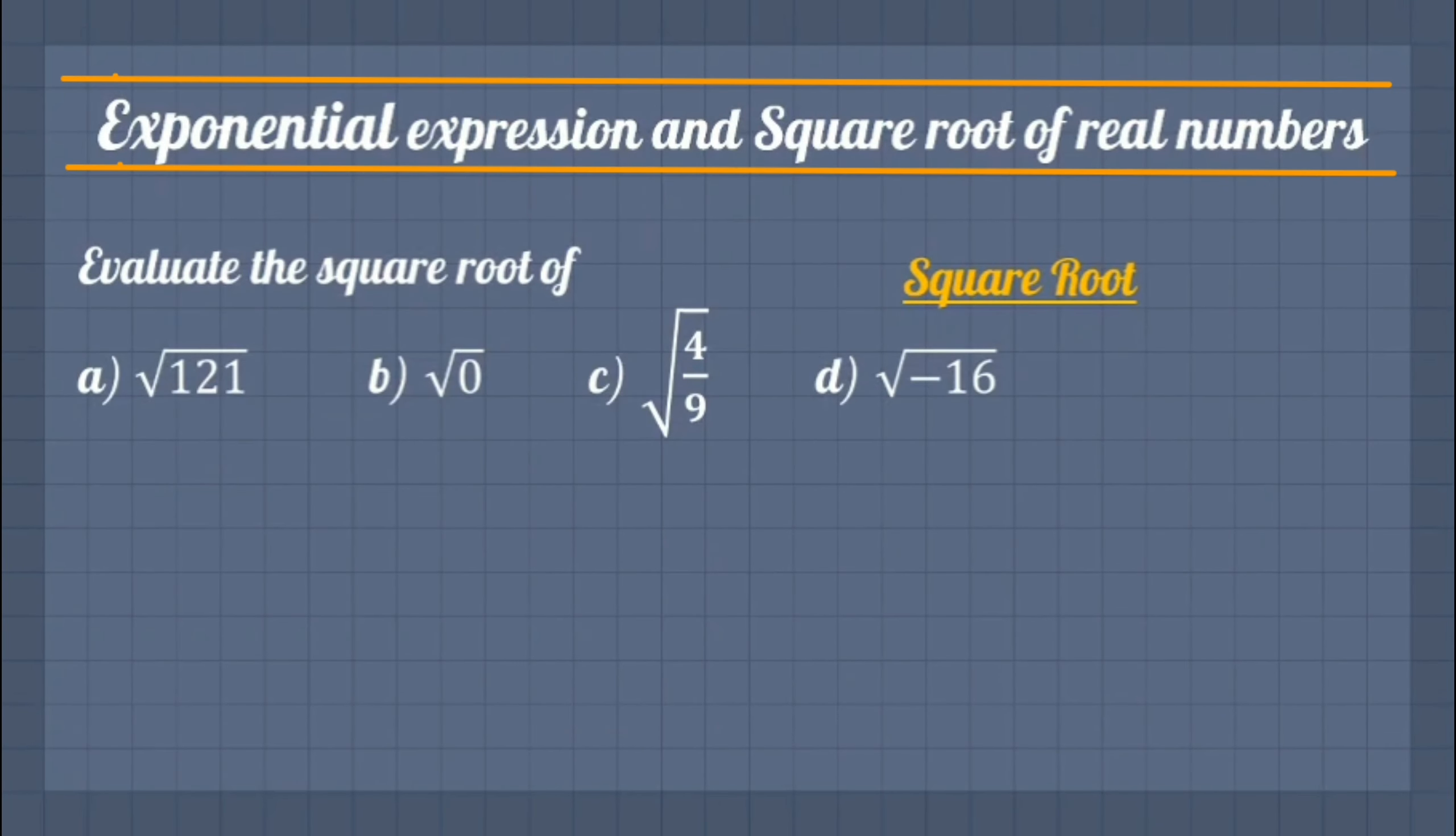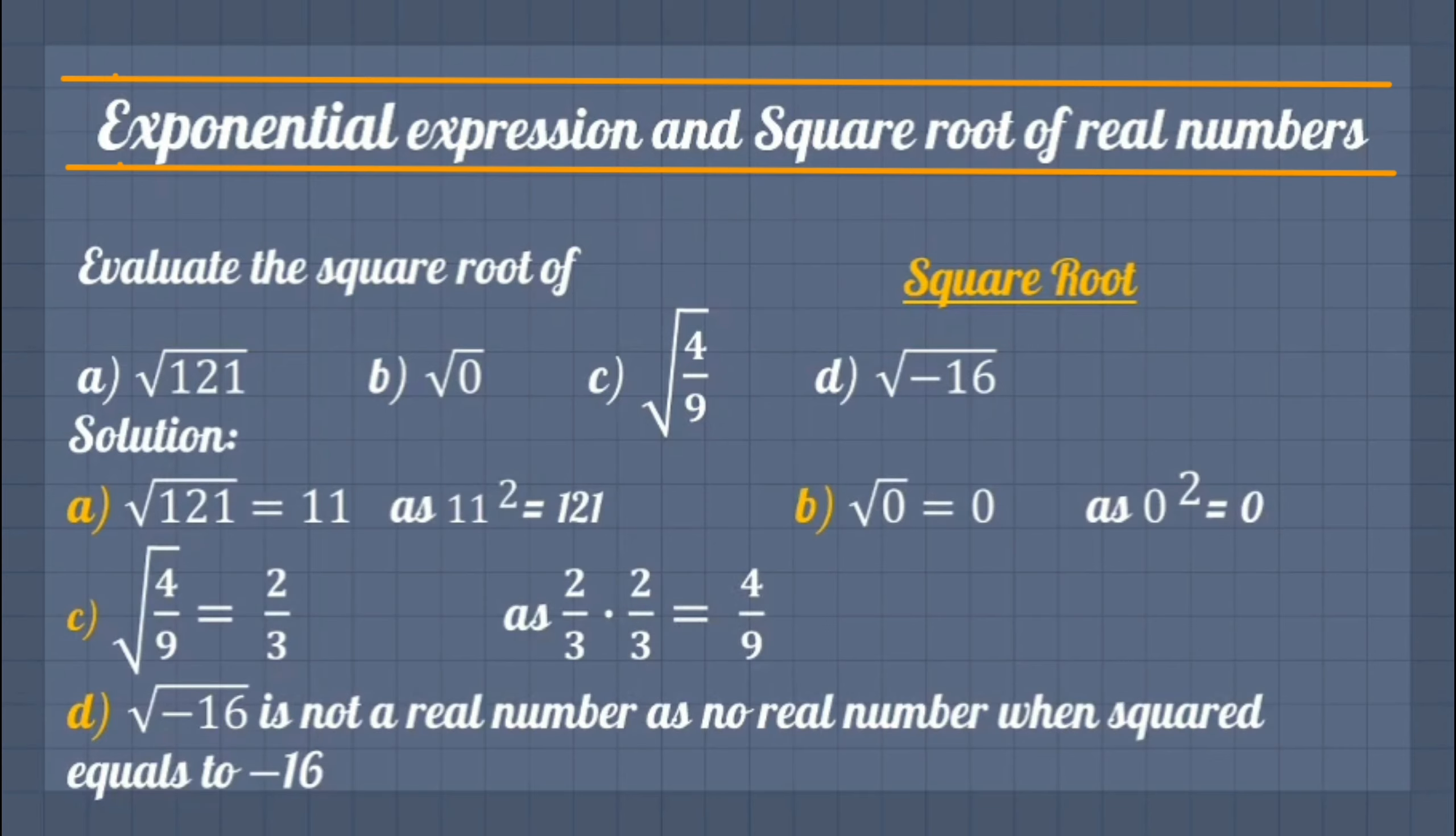Let's evaluate the principal square root by some examples. In the first three examples we found the principal square root. But in the final example, the positive square root of minus 16 is actually not a real number. It is because no real number is negative when squaring.